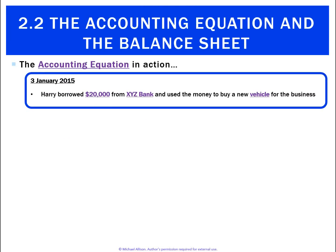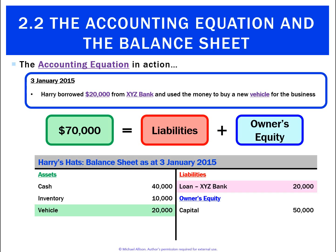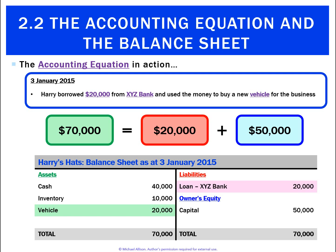On the 3rd, Harry borrows $20,000 from XYZ Bank and uses that money to buy a new vehicle for the business. We've now got a new asset called vehicle, and our balance sheet is out of whack. The other factor is we now have a liability called loan to XYZ Bank for $20,000. Checking our accounting equation: assets of $70,000, liabilities of $20,000, owner's equity of $50,000 — and our balance sheet does balance.